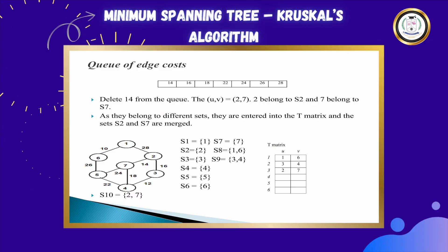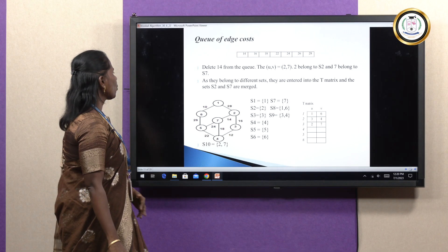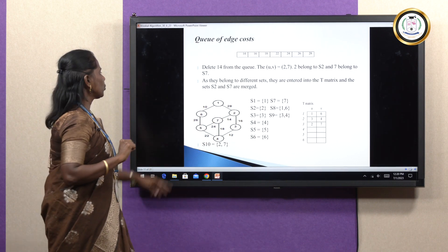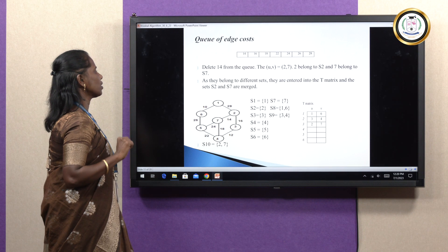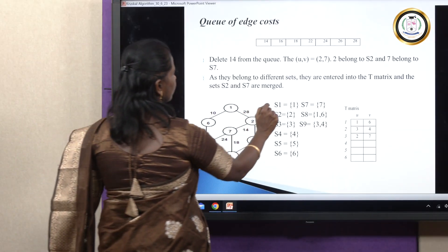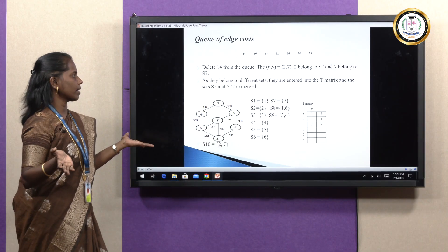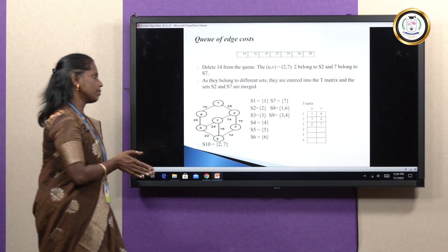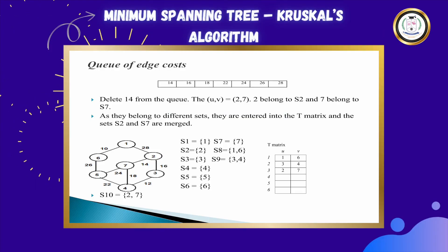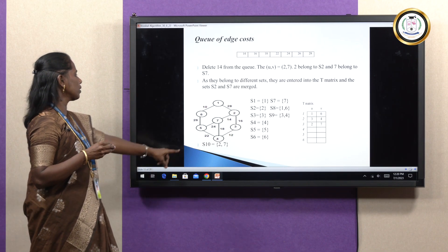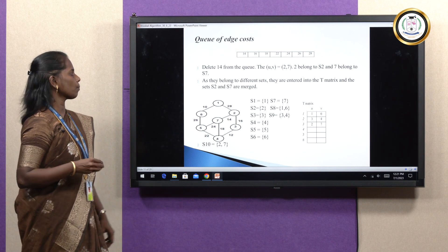The next value is 14. Find the nodes associated with 14 — they are 2 and 7. Check if 2 and 7 are in the same set or different sets. 2 is present in set S2 and 7 is present in set S7. Since they are in different sets, place them in the T matrix as (2, 7). After placing that, merge S2 and S7 to create a new set called S10 with values 2 and 7.